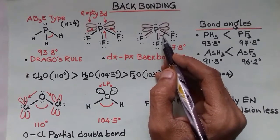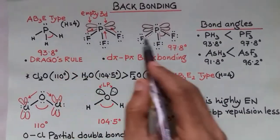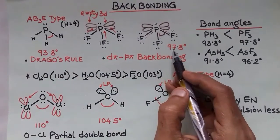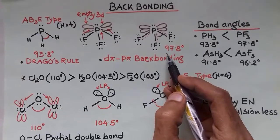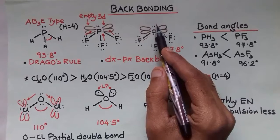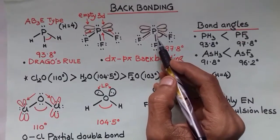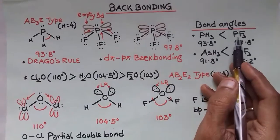Double bond-double bond repulsion is more than single bond-single bond. So the bond angle increased to 97.8. Normally in VSEPR theory, lone pair-bond pair repulsion is higher. But here double bond-double bond repulsion is higher and bond angle increases.